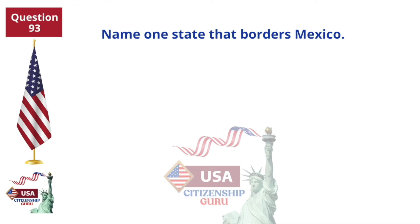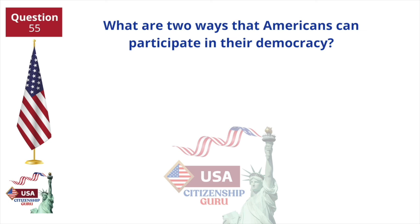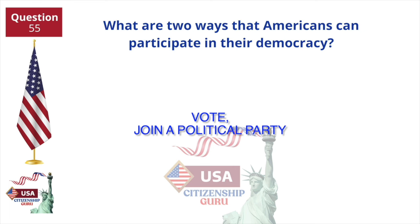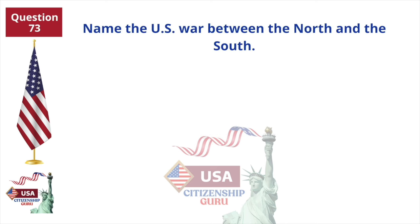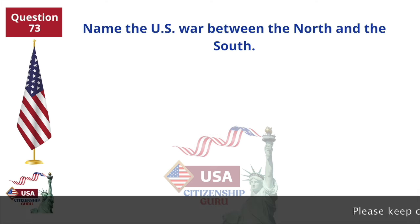Name one state that borders Mexico. What are two ways that Americans can participate in their democracy? Name the U.S. war between the North and the South.